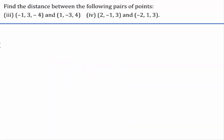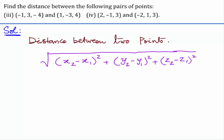In this problem, we have to find out the distance between the given pairs of points. The formula to find the distance between two points is the square root of (x2 minus x1) whole square plus (y2 minus y1) whole square plus (z2 minus z1) whole square.